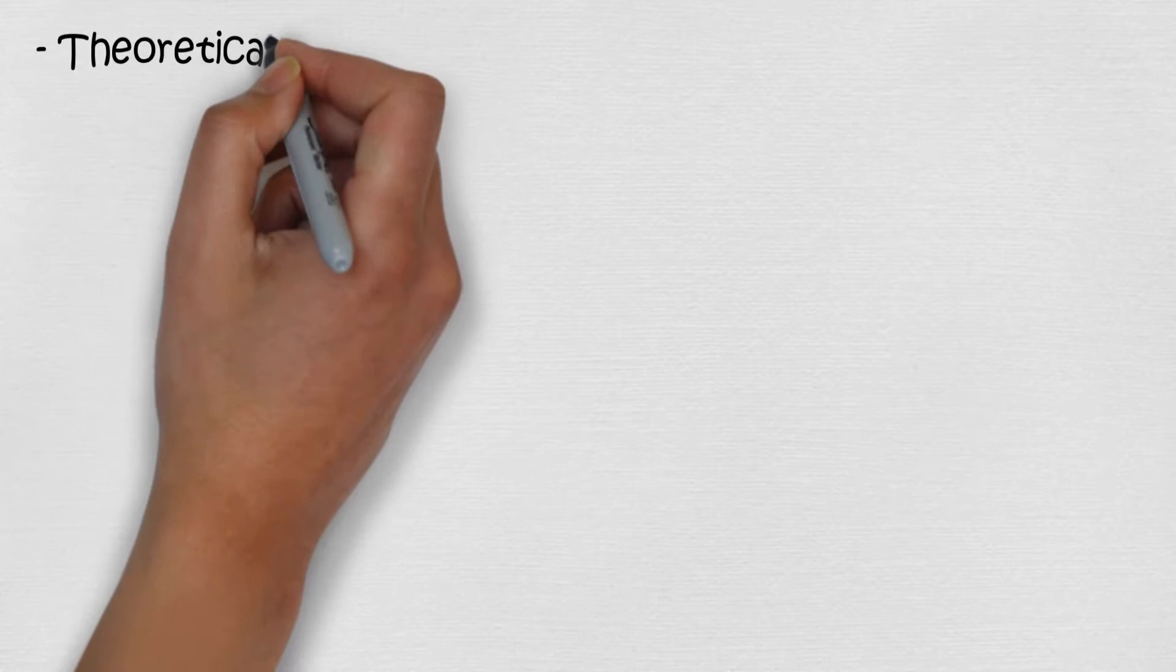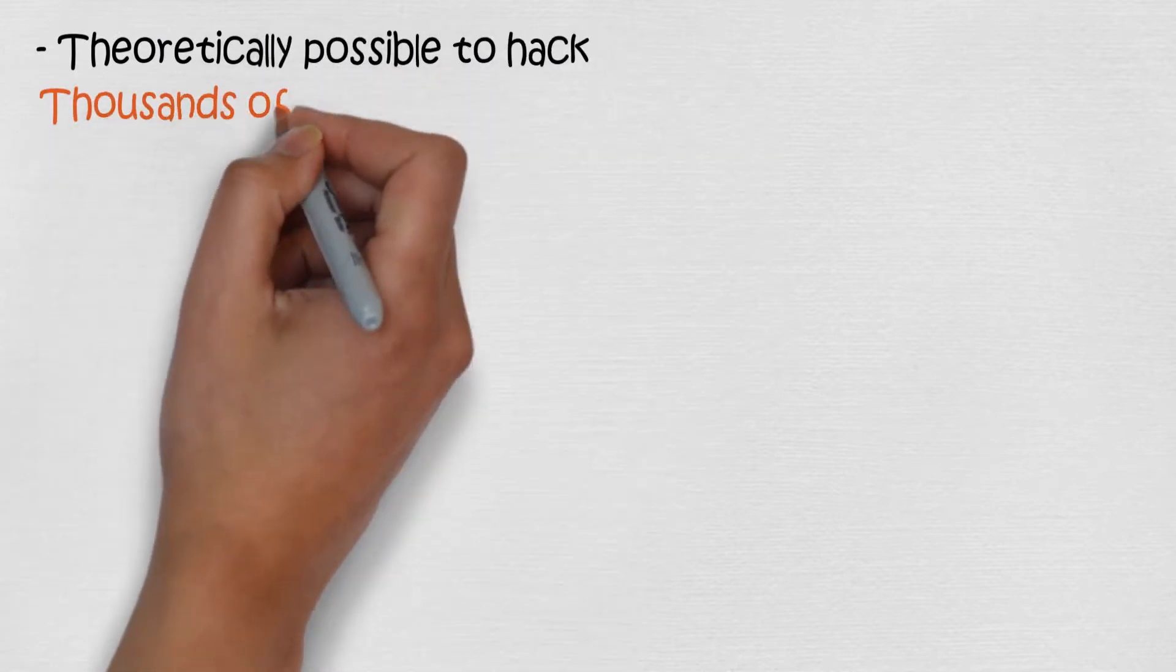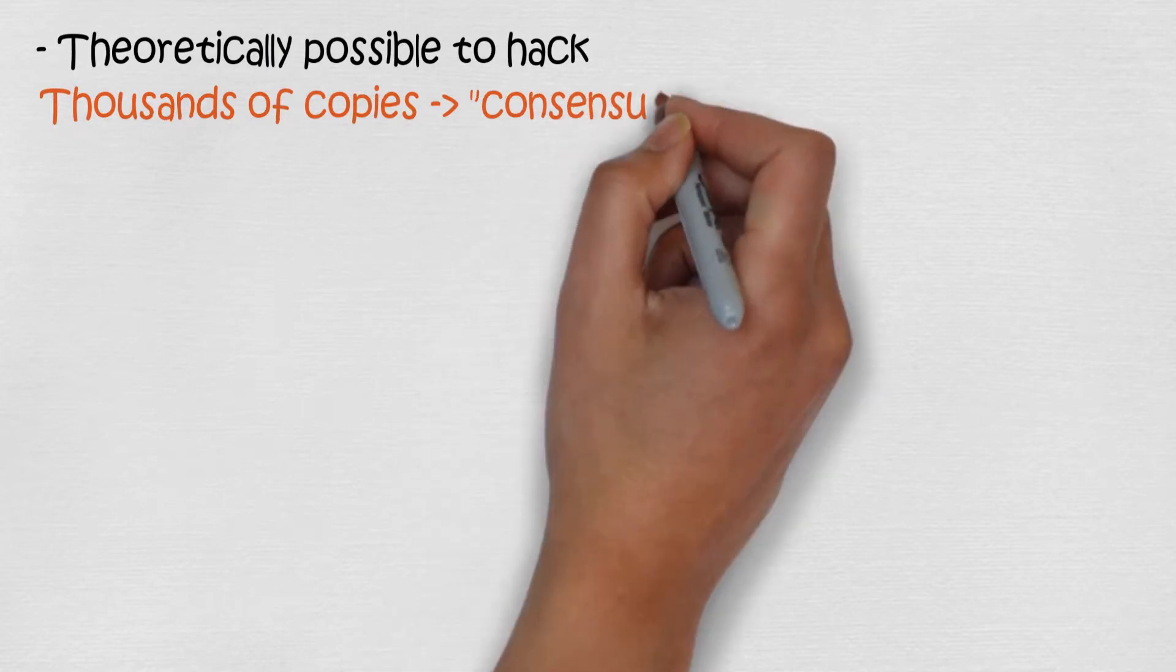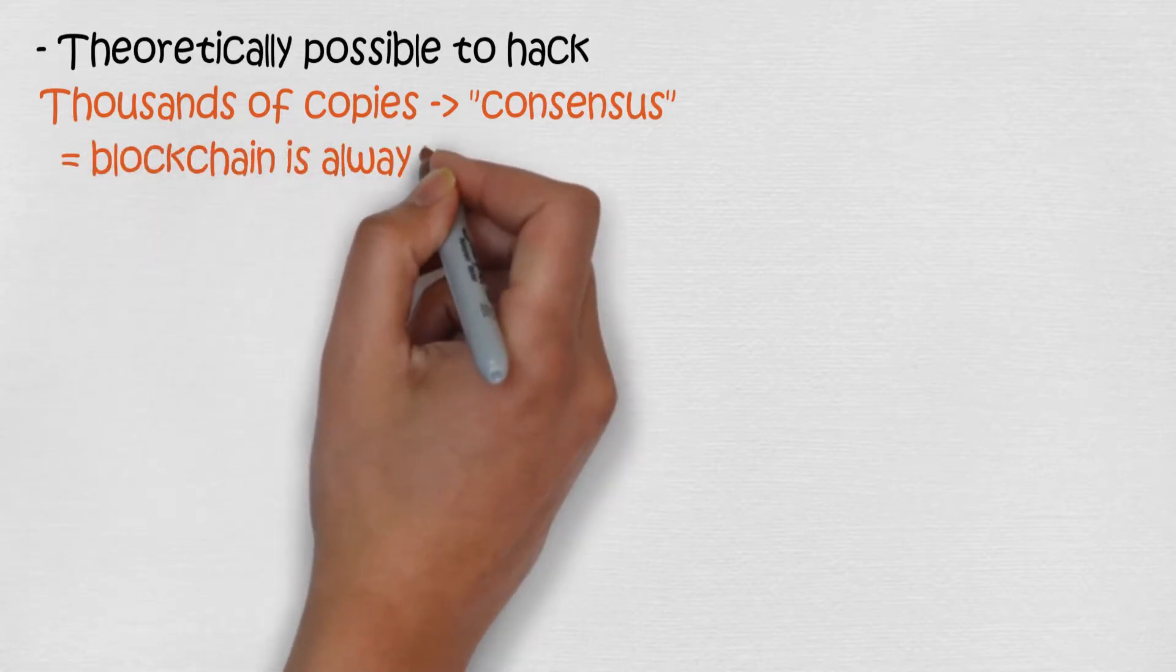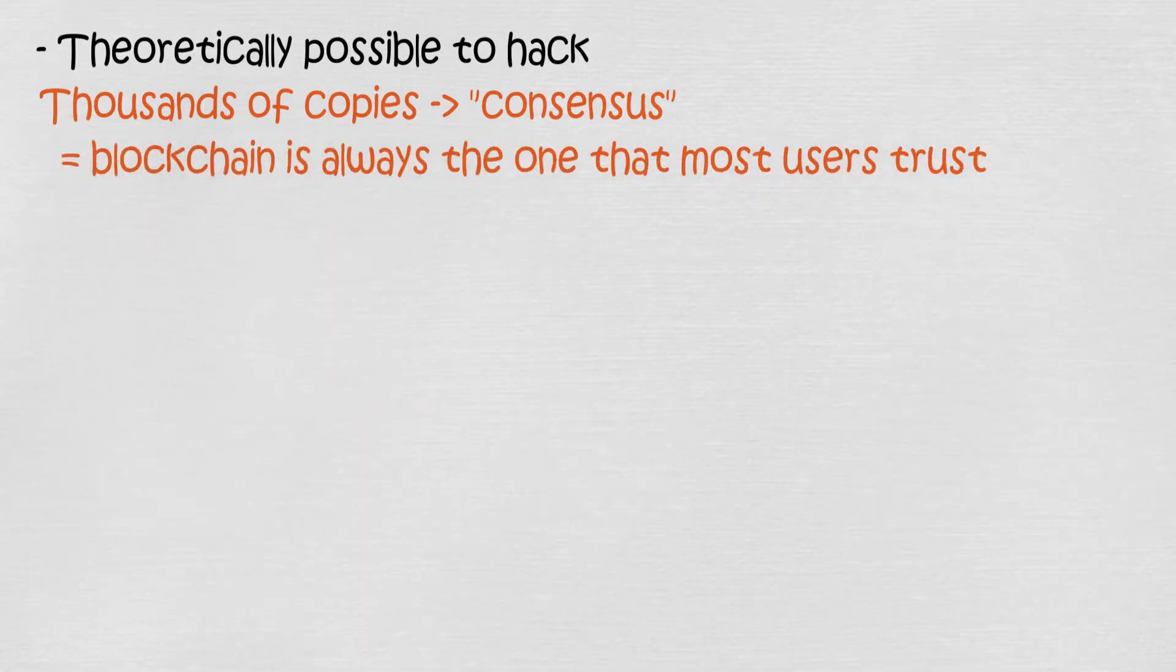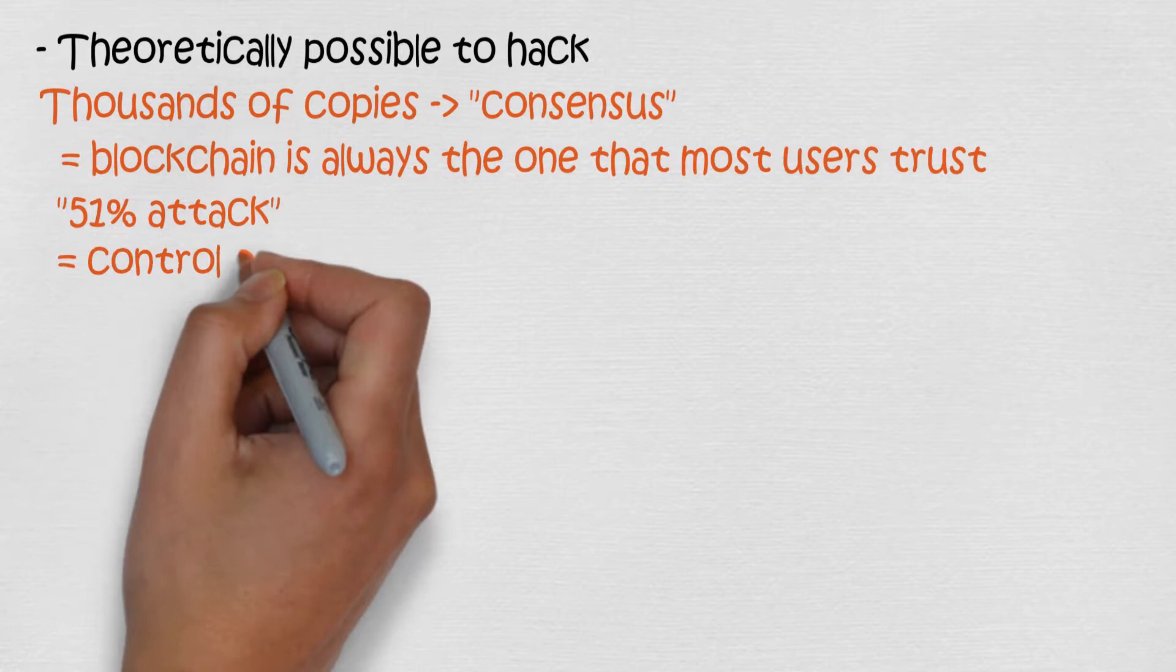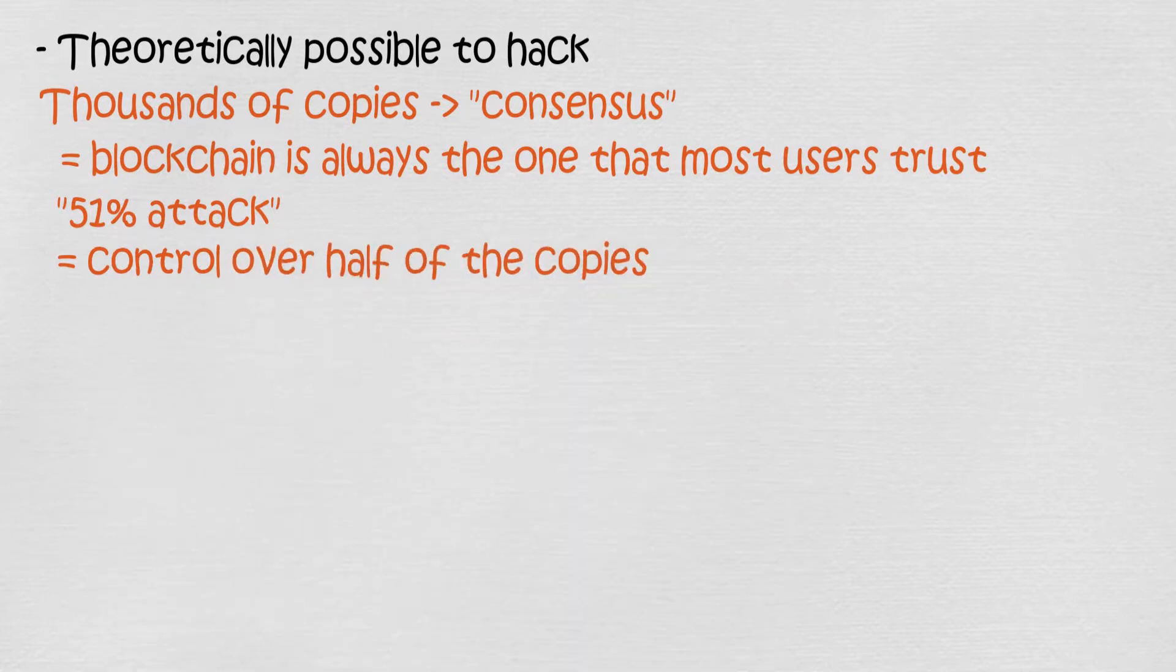Even though blockchain is very secure, it is theoretically possible to hack it. Because there are thousands of copies, some copies could differ from others. Because of this, the blockchain uses a process called consensus. This means that the blockchain is always the one that most users trust to be the right one. So to hack a blockchain, you would need to be able to control over half of the copies. This is called 51% attack.